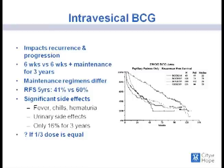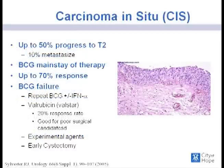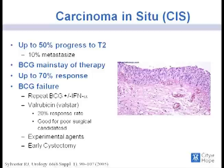BCG maintenance can improve recurrence-free survival rates by about 20%, though it has increased side effects including BCG-osis. Decreasing the maintenance dose to one-third may reduce side effects. Some form of maintenance regimen should be used to maximize BCG benefit. For carcinoma in situ, up to 50% of patients will progress to muscle-invasive disease. BCG is the mainstay of therapy, with up to 70% response rate. BCG failures can receive repeat BCG combined with interferon. Valrubicin has a 20% response rate for patients not candidates for cystectomy.